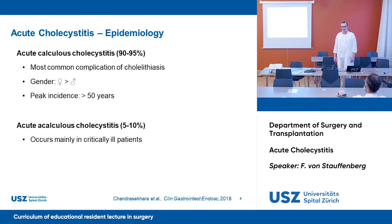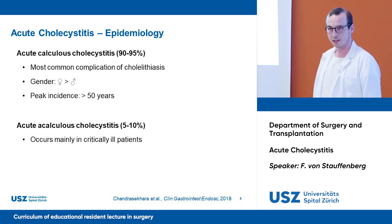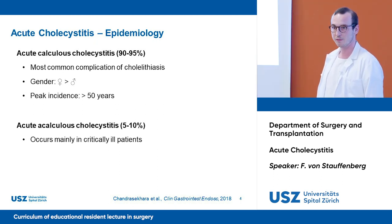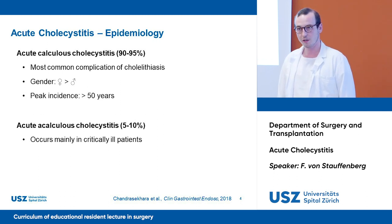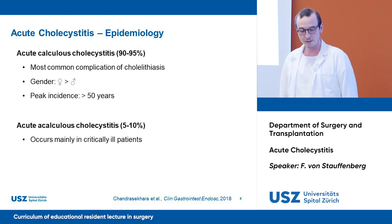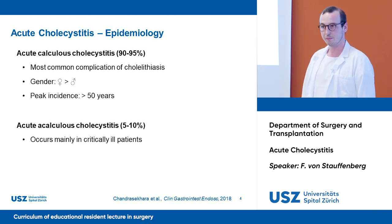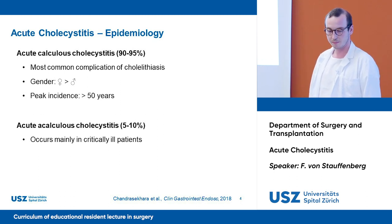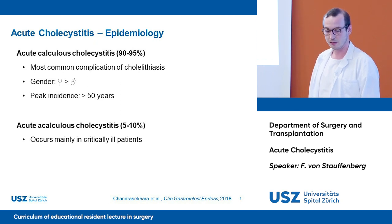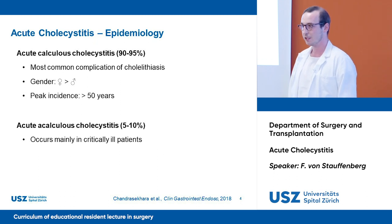There are two main types of acute cholecystitis. Acute calculous cholecystitis makes up to 90 to 95 percent of cases and is the most common complication of cholelithiasis. It affects more females than males and has a peak incidence in patients over 50 years of age. Acute acalculous cholecystitis, without the presence of a gallstone, makes up to 5 to 10 percent of cases and occurs mainly in critically ill patients.